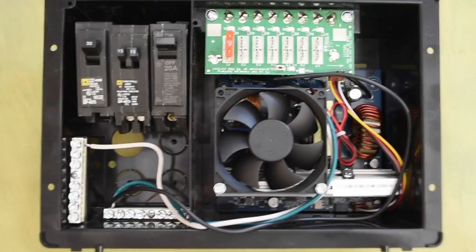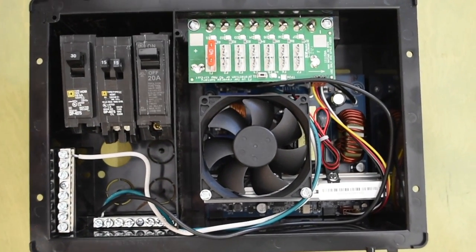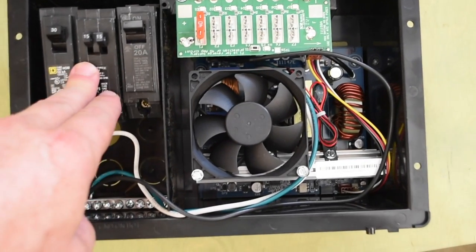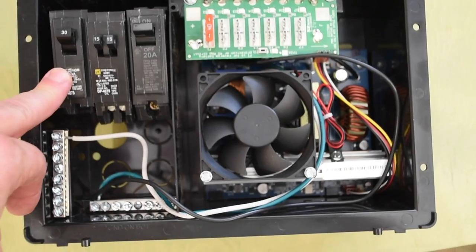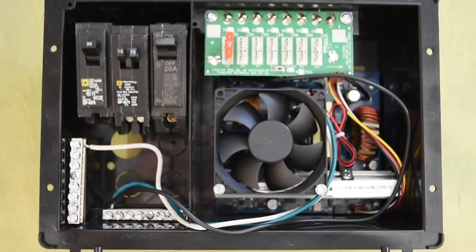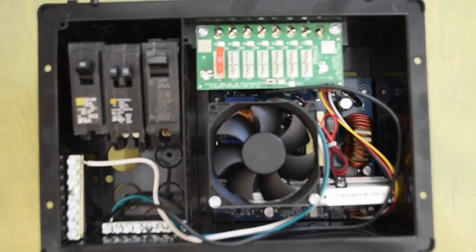I also want to point out that for this configuration, I've oversubscribed the main breaker with two 15 amp and a 20 amp totaling 50 amps. The theory is that these appliances won't be running simultaneously at any given time, nor at maximum power.